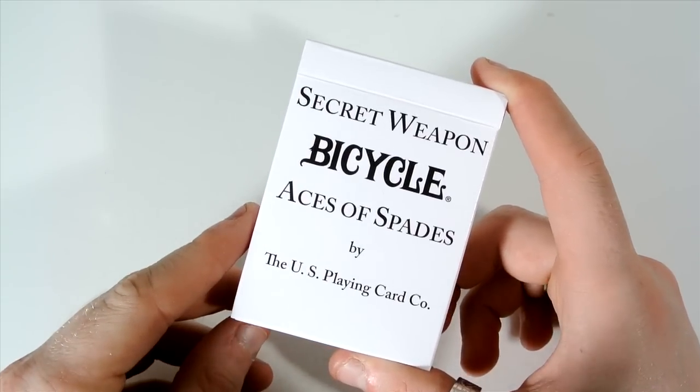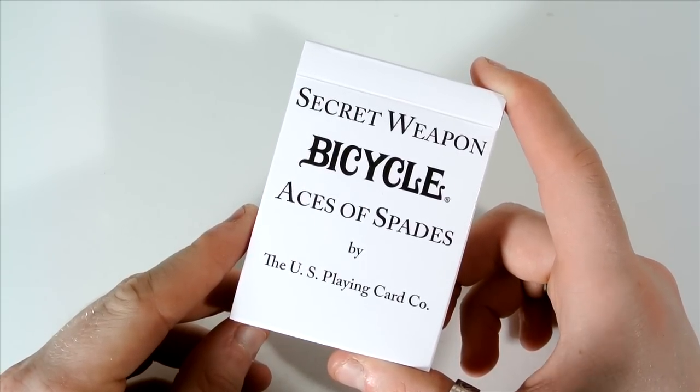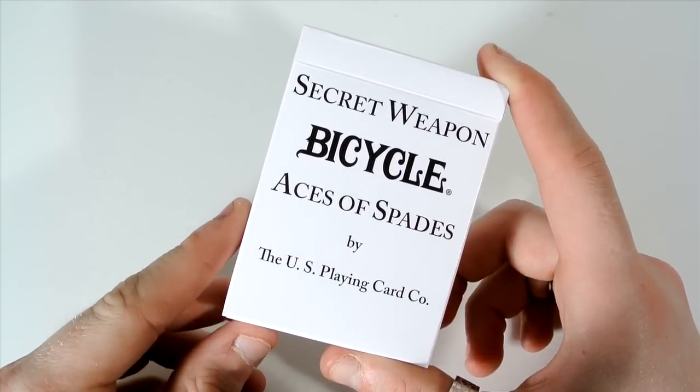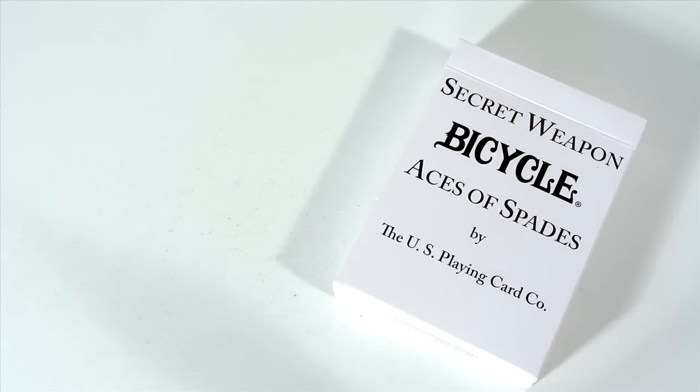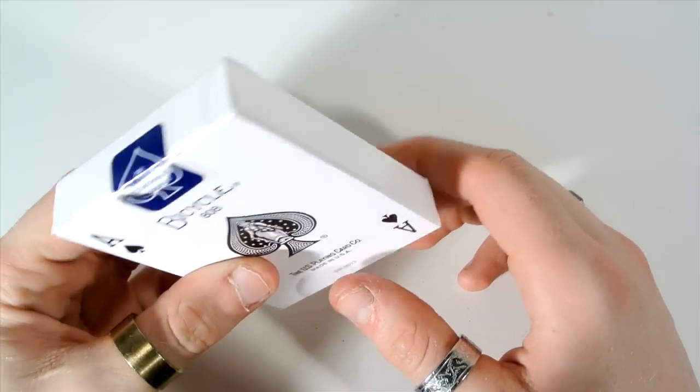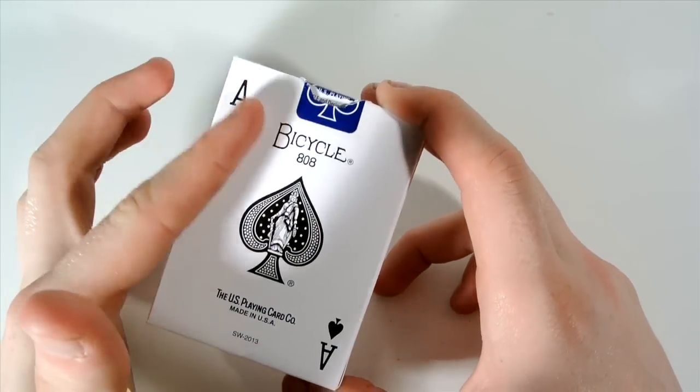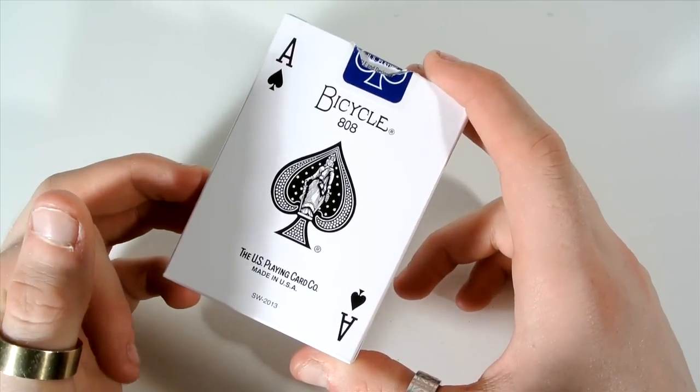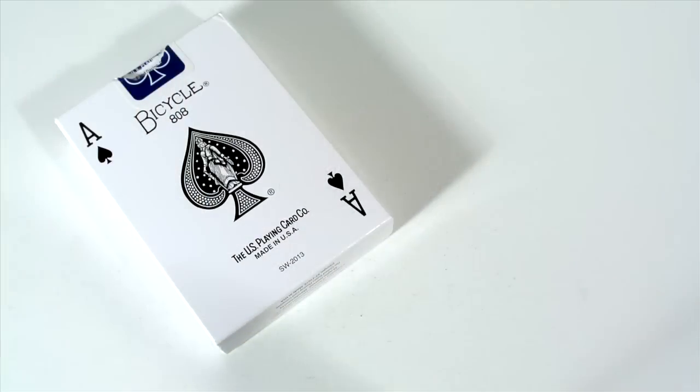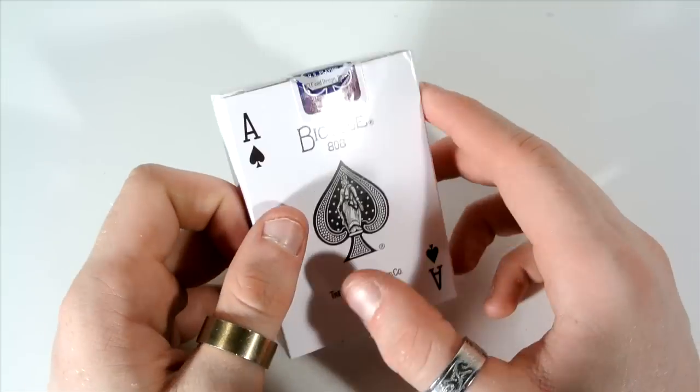Okay, so first off it has Secret Weapon Bicycle Ace of Spades by the United States Playing Card Company just on the front of the tuck case there. It has nothing on the sides and it has a blue USPC seal. As you can see on the back it has Ace of Spades - it does not have a back design reveal but it just has the Ace of Spades, the USPC, and it has some copyright information just there.